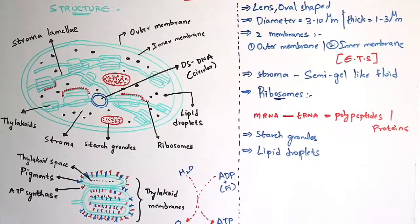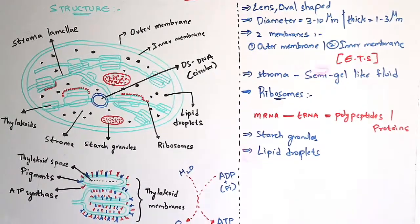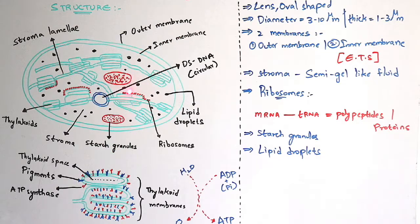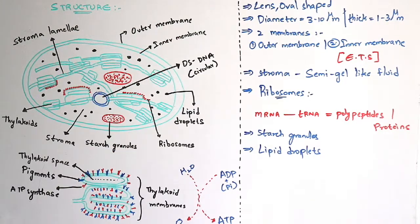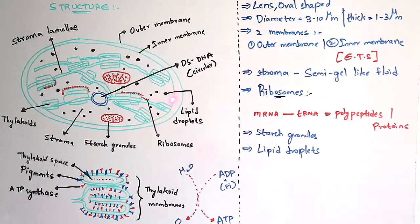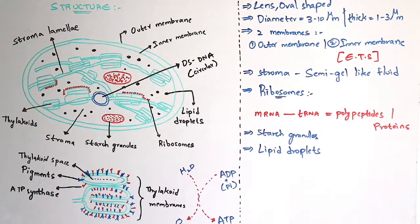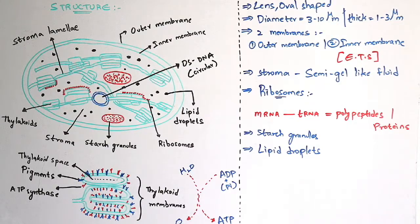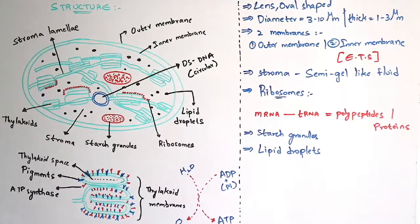The stroma also consists of starch granules — the main function of starch granules is storage of starch. It also consists of lipid droplets. These lipid droplets are very rich in lipids, and the main function of lipid droplets is that they act as a reservoir for carbohydrates.